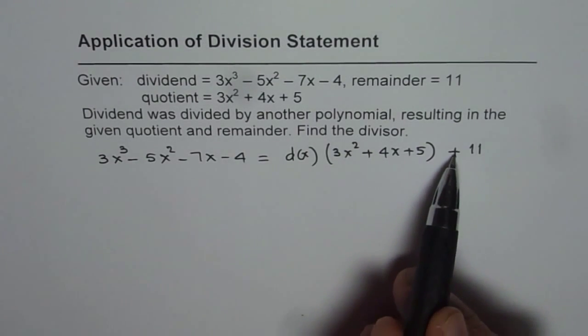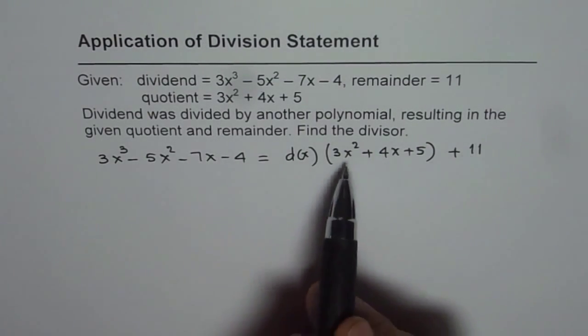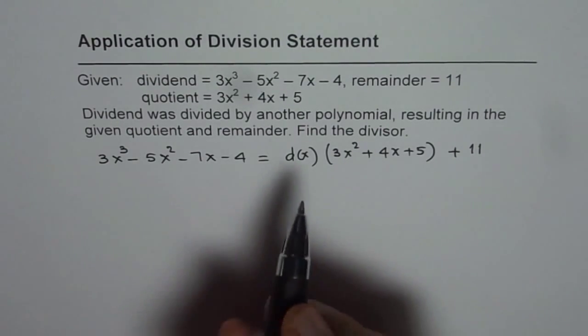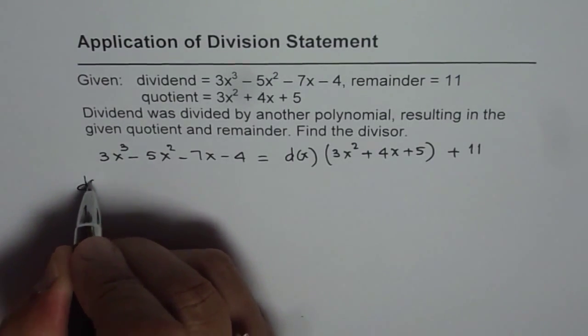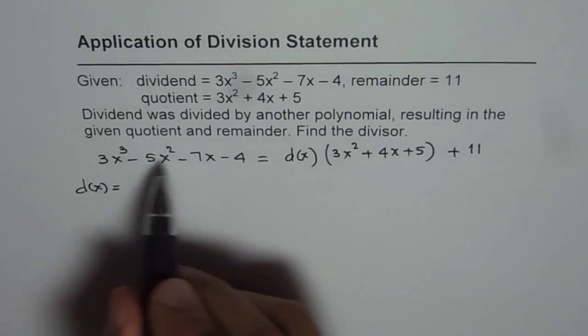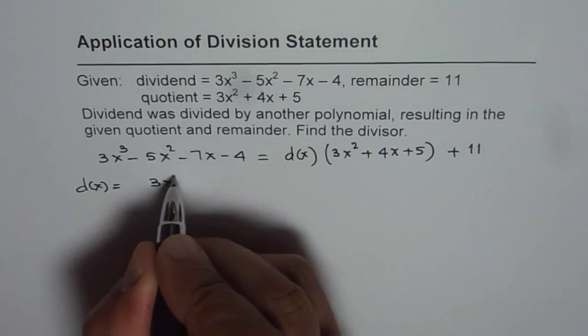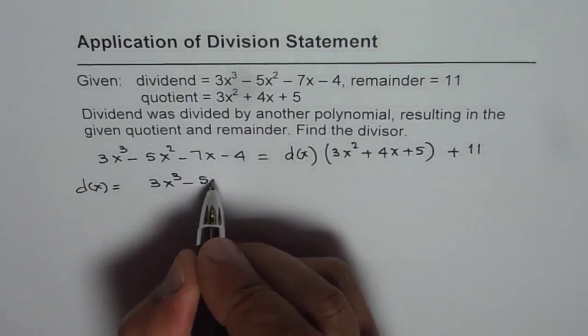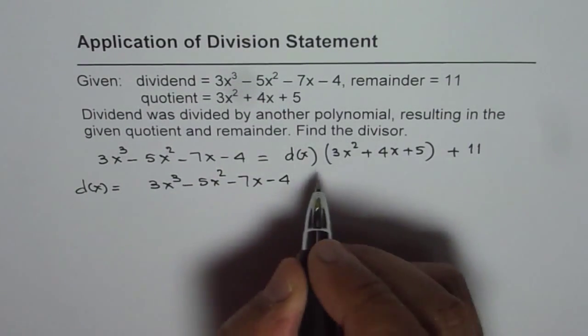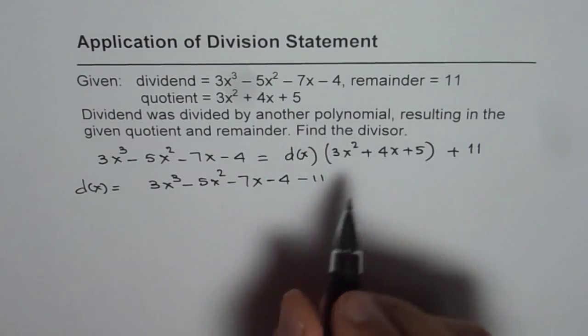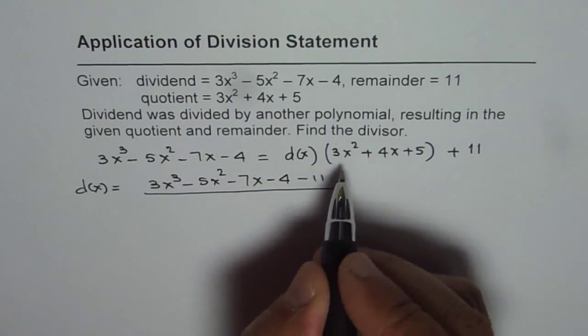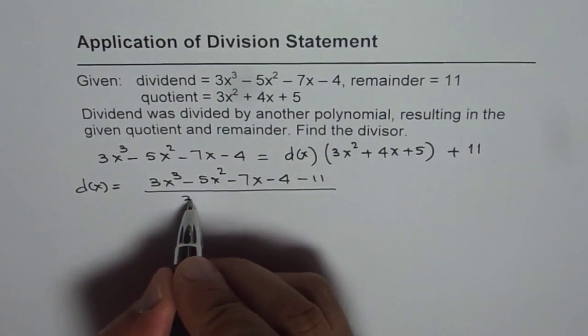So first we can take away 11 and then divide by 3x square plus 4x plus 5 to get the value of divisor. So we can say divisor d of x is equal to difference of this from 11, that is 3x cube minus 5x square minus 7x minus 4 minus 11, and then we will divide by 3x square plus 4x plus 5.